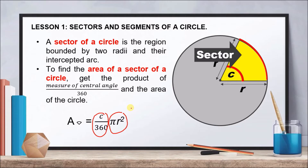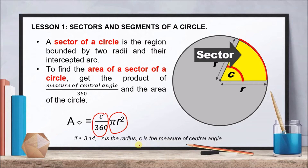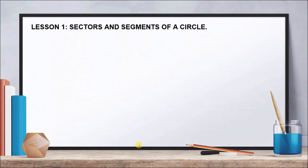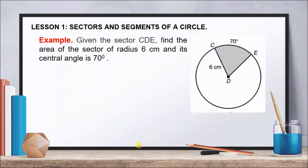For our examples, we are given the radius or central angle, and remember that π = 3.14 rounded to two decimal places. Here r is radius and c stands for the measure of our central angle. Our first example: we are given sector CDE, shaded in gray, and we need to find the area of the sector with a radius of 6 centimeters and a central angle of 70 degrees.